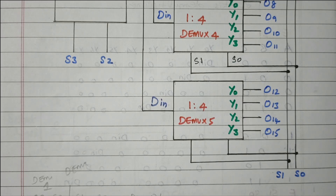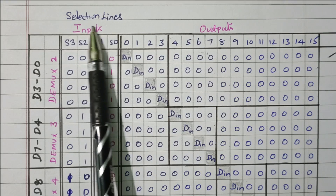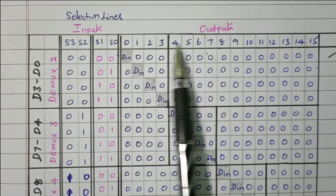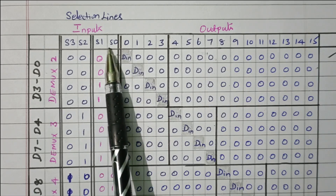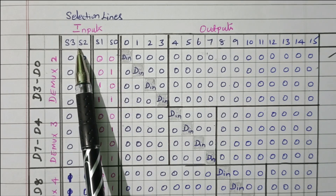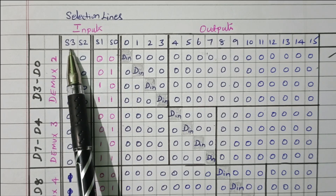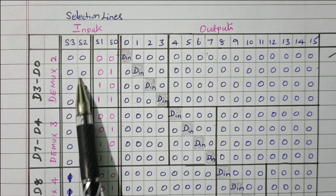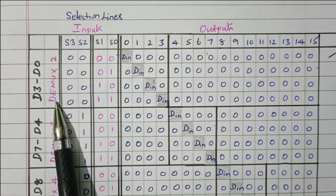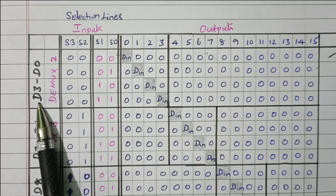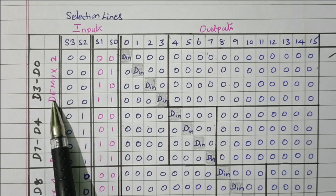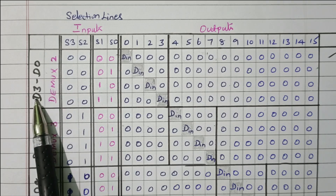Now we will refer to the truth table so that we can understand clearly. The selection lines are S0, S1, S2, S3, and there are 16 different outputs from 0 to 15. We already know that S1 and S0 are connected to all 4 demultiplexers, and S3 and S2 are connected to the one controlling demultiplexer to control the other 4 demultiplexers. When S3S2 is 00, DMUX2 is enabled, and we get data from D0 to D3.